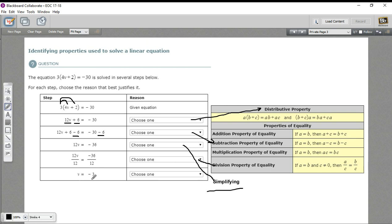And then finally, they actually do the calculation on the division. That is simplifying again. So this one is also going to be simplifying. And you come up with V equals negative 3. So that is how to identify the properties you're using when you solve an equation like this.